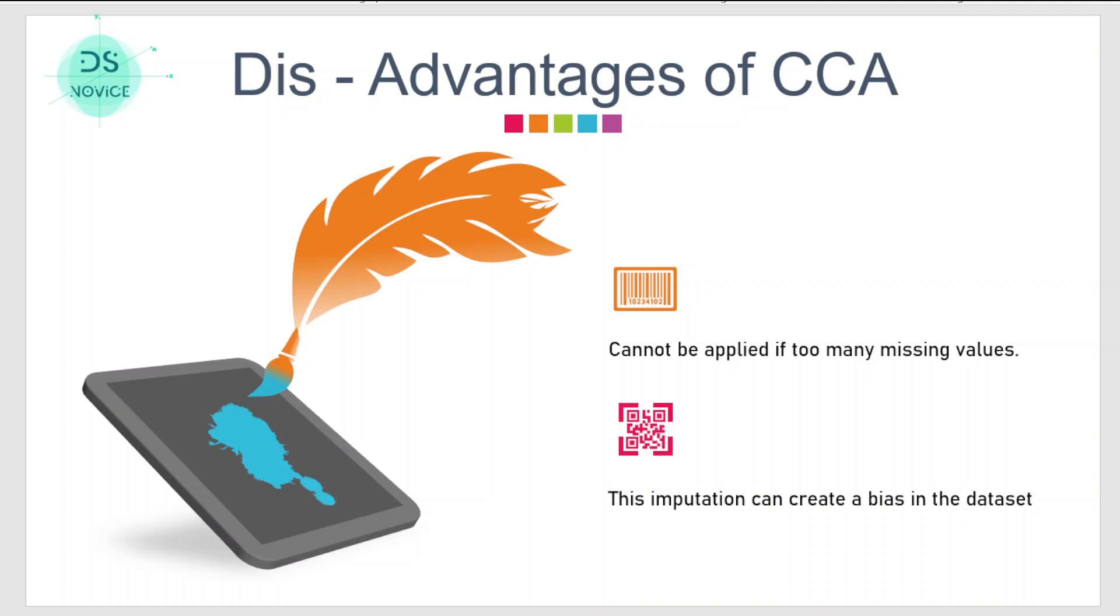There is another thing - data loss. Because here the operations happening row wise, even though we are dropping the missing values for a column, the observation whether they are missing or not will be dropped in that row for all the other columns as well. So in a way we are dropping useful information.